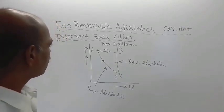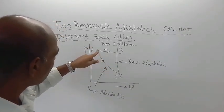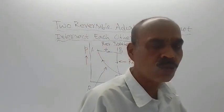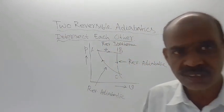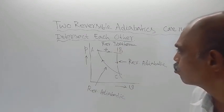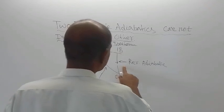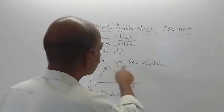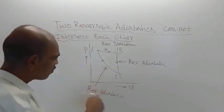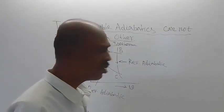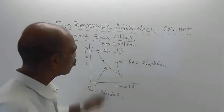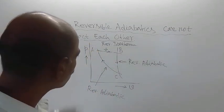The area ABC represents work output from the system. On a PV diagram, this area indicates work output from the system. Since CA and BC are reversible adiabatics, there is no heat interaction during these processes. This is also reversible adiabatic, so there is also no heat interaction.